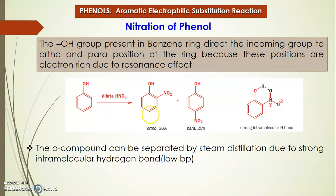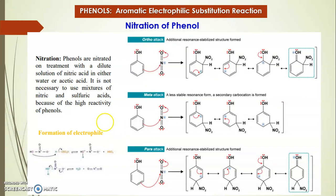These two isomers can be separated because the ortho isomer has a strong intramolecular hydrogen bond, while the para isomer has an intermolecular hydrogen bond. The ortho compound has a lower boiling point because of its intramolecular hydrogen bond, and so it can be separated by steam distillation.